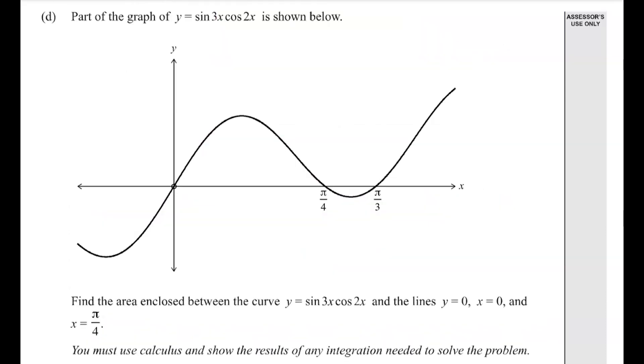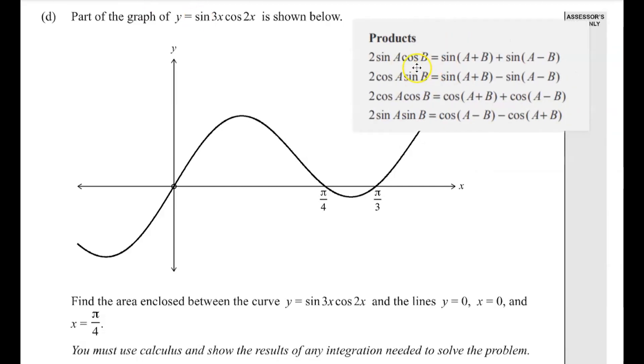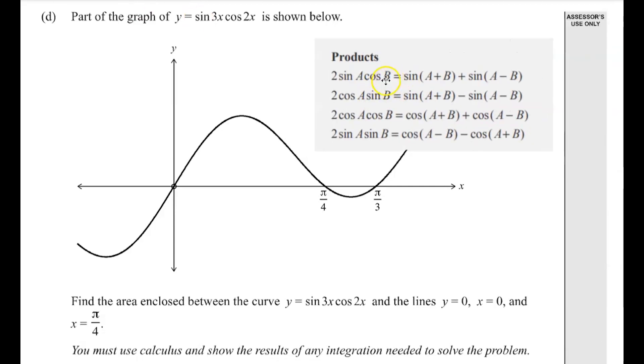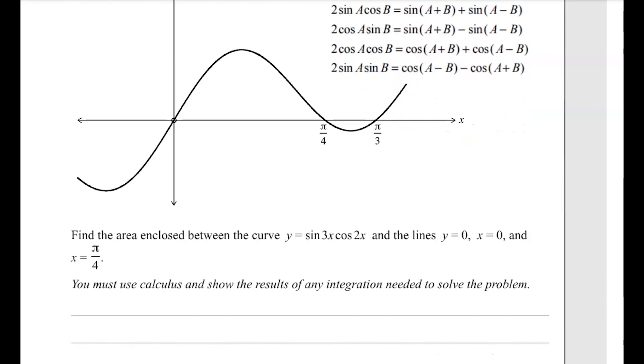Part d's got the graph of sin 3x cos 2x, which means we are going to need to use our product rules that look like this. Find the area enclosed between the curve and the lines y equals 0, x equals 0, and x equals pi by 4. So we're finding this area here, which means we need to integrate.